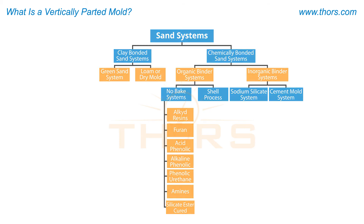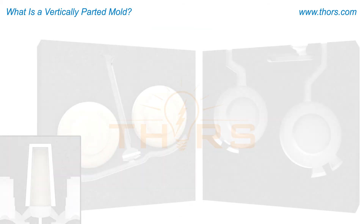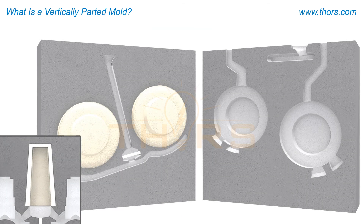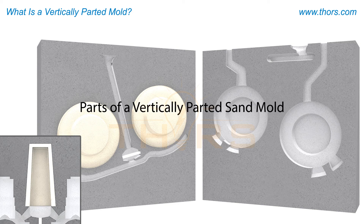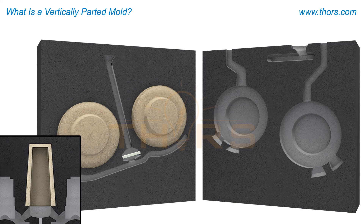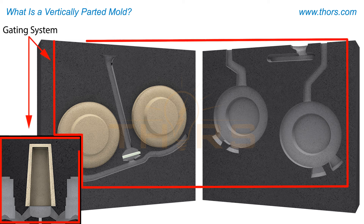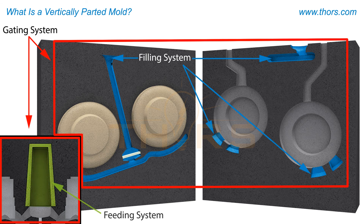To better understand a vertically parted sand mold, it is important to know the parts of the mold and each part's function. The parts of a vertically parted sand mold include the gating system, which is composed of the filling system and the feeding system.